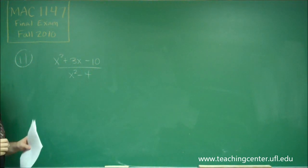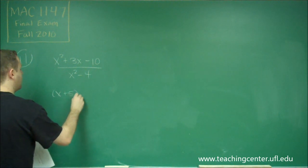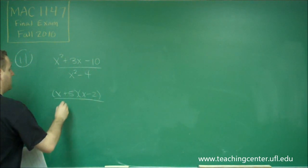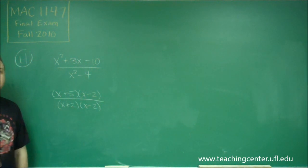So here's our rational function, so we always want to try to factor. Our numerator factors into (x + 5)(x - 2). Our denominator factors into (x + 2)(x - 2), because that's the difference of two squares.